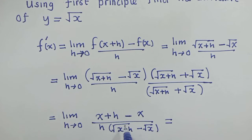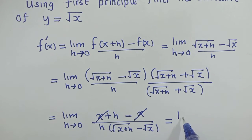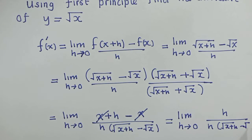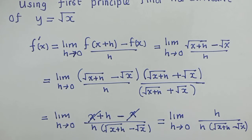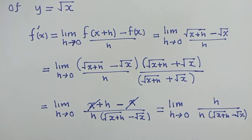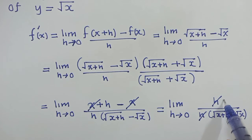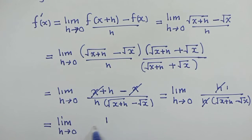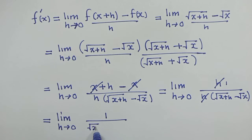After getting this, you can see we have a minus here, meaning x plus h and x will cancel. We shall have limit as h approaches 0. On top we remain with h, and below h multiplied by root of x plus h plus root of x. Remember, we are trying to cancel this h in the denominator. This h and the h here will cancel, and we remain with 1 over root of x plus h plus root of x.